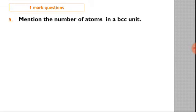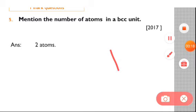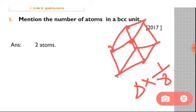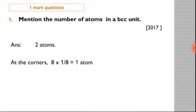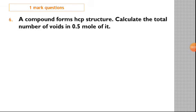Question number five: find the number of atoms in a BCC unit cell. This is from 2017. The answer is two atoms. In a BCC unit cell, we have 8 corner atoms each contributing 1/8, giving 1 atom total, plus 1 body center atom, for a total of 2 atoms.